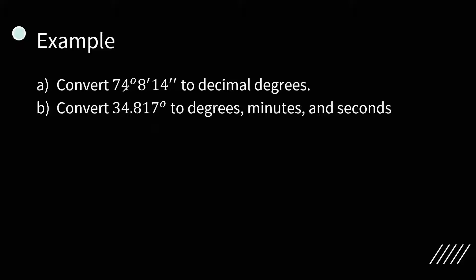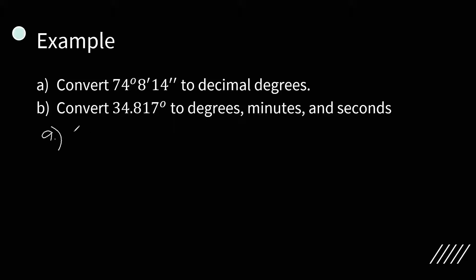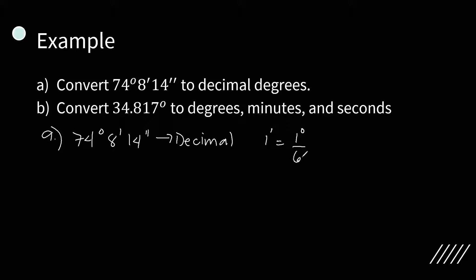So let's have the following examples. Convert 74 degrees 8 minutes and 14 seconds to decimal degrees, and convert 34.817 degrees to degrees, minutes, and seconds. Let's start with letter A. We are asked to convert 74 degrees 8 minutes and 14 seconds to decimal. We know that 1 minute is equal to 1 degree over 60 and 1 second is equal to 1 degree over 3600.